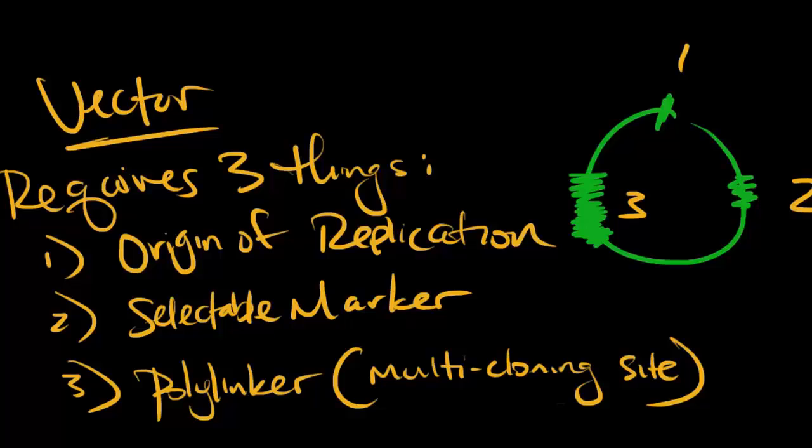The three things are: one, an origin of replication, otherwise the plasmid would never be replicated. Two, a selectable marker, which is a gene that gives it resistance to whatever we'll use to kill the bacteria that didn't take up the vector. And three, a polylinker, which is just an area of multiple restriction enzyme cut sites. This is where your insert will go.